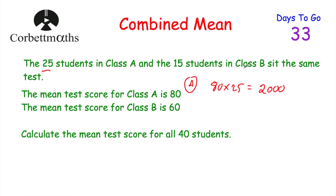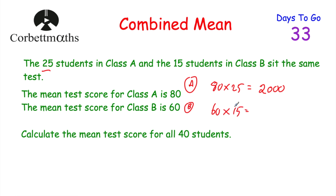Now in terms of class B, there are 15 students and their mean is 60. So that means if we added up all 15 test scores and divided by 15, we get 60. So if we take 60 and multiply that by 15, we can get the total for class B. 60 times 15 is equal to 900.